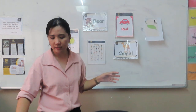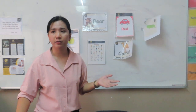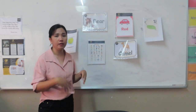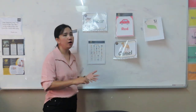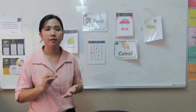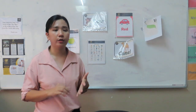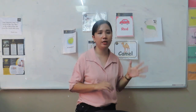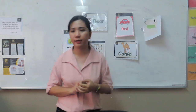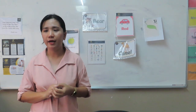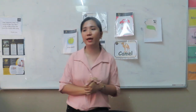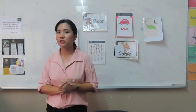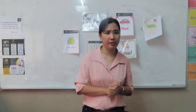I think you learned something today. Get your notebook and list all the non-living and living organisms — five each. We will check. Are you done? Let's check. Most of you got the highest score, so I think you learned our lesson for today.